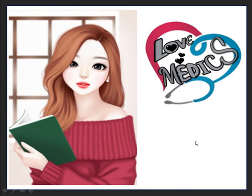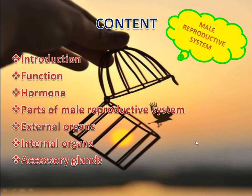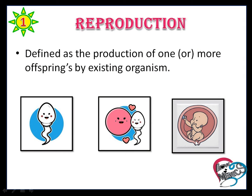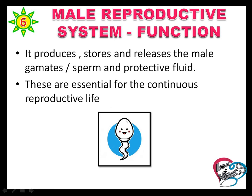Hello friends, welcome back to Lomedics. In this video I am going to explain about parts of the male reproductive system. Reproduction is the production of one or more offspring by an existing organism. Many organs are involved in reproduction, so those organs are collectively called the reproductive system.